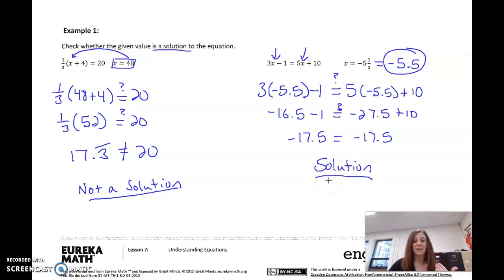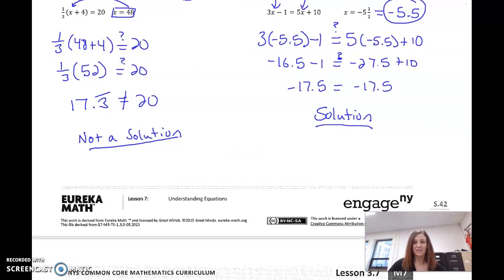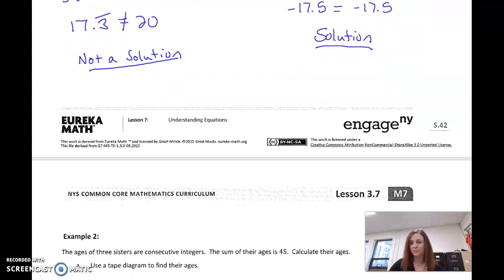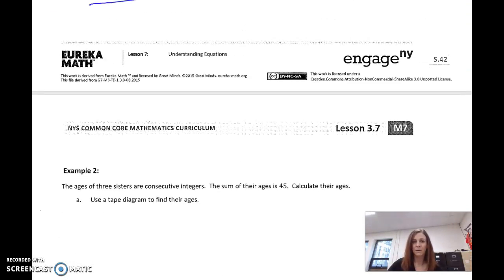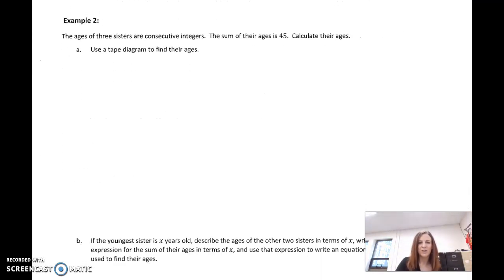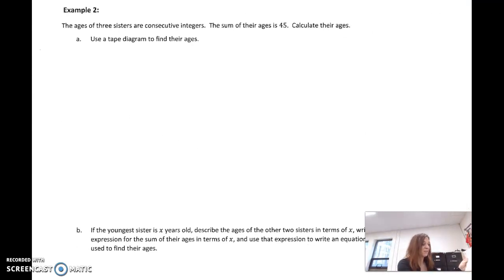So that's the difference between being a solution and not a solution. A lot of times, people think they have to do more work, but the answer is just really a yes or no question. A solution makes an equation true. Alright, let's look at the next example real quick. Alright, so we are going to do some tape diagrams. It says the ages of three sisters are consecutive integers. Consecutive means in order.